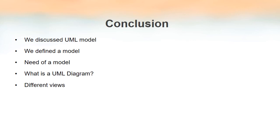To conclude this video lecture: we discussed what UML is, what a model is, the need for a model, and that there are nine UML diagrams in total. The different views of a system are uses, structural, behavioral, implementation, and environmental views. Depending on the view we want to model, the diagram to use will be different. In the next video lectures we will see each diagram — use case, class, object diagram — one by one.